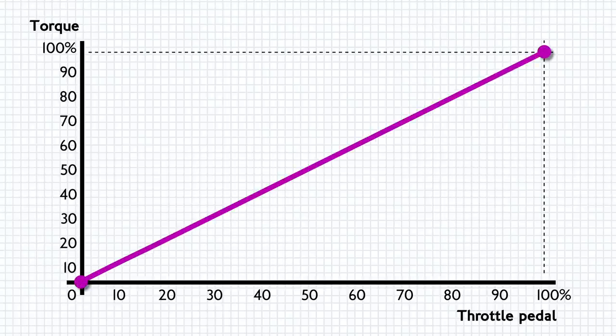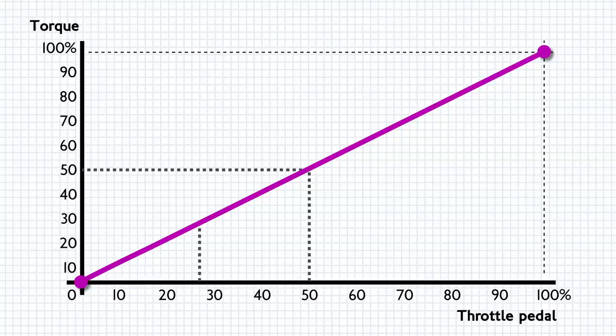We could draw a straight line between these points to create a linear relationship. That would mean 50% throttle produces 50% torque, 27% throttle produces 27% torque and so on like that. And you might think, cool, that makes sense. If I'm a driver that would be incredibly intuitive to me. I'd know exactly where I am with that.